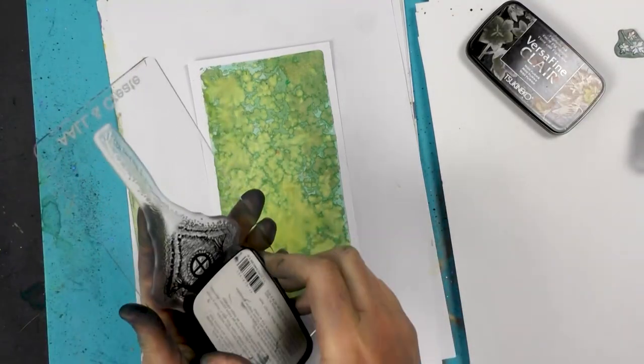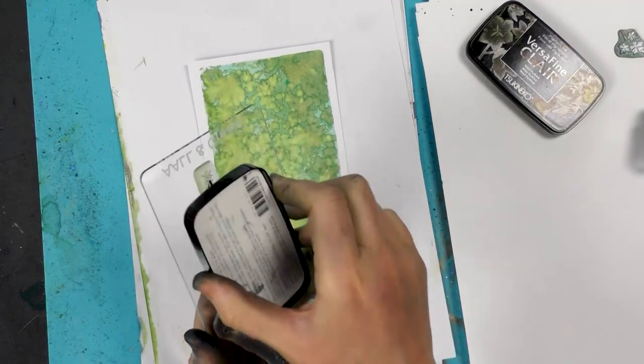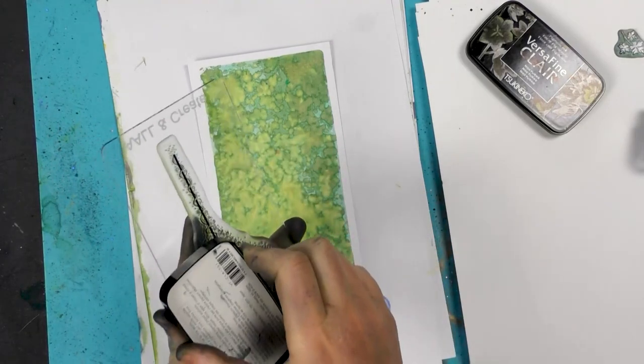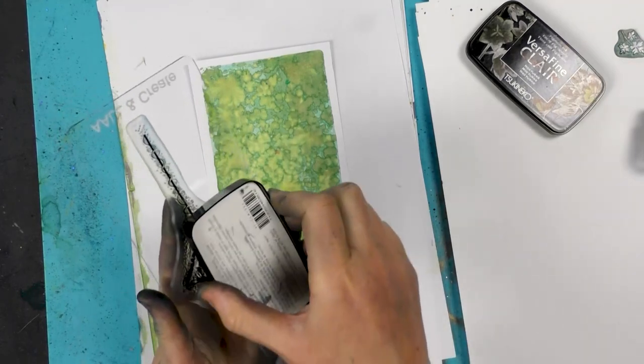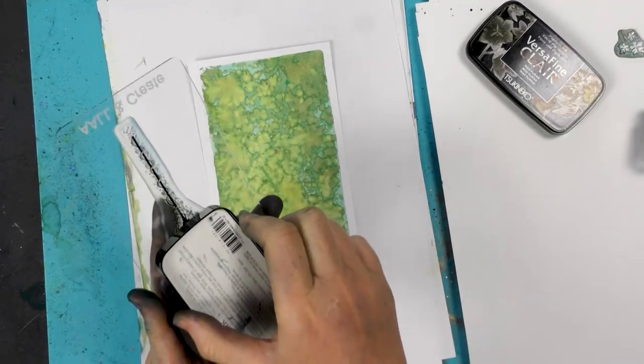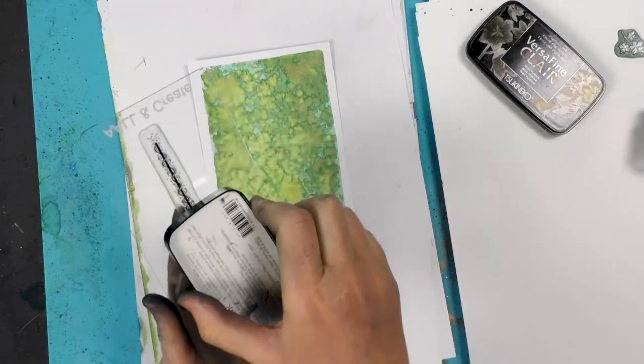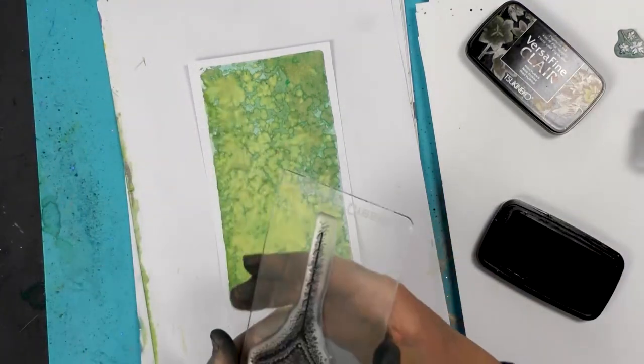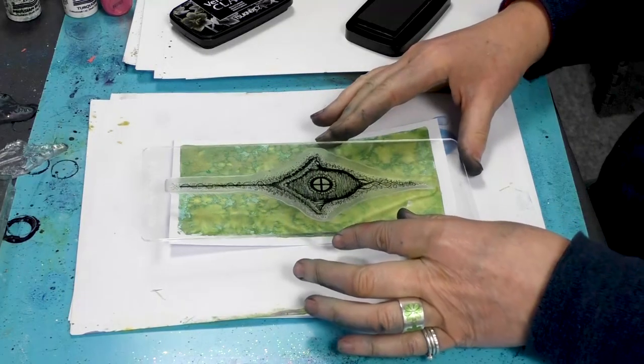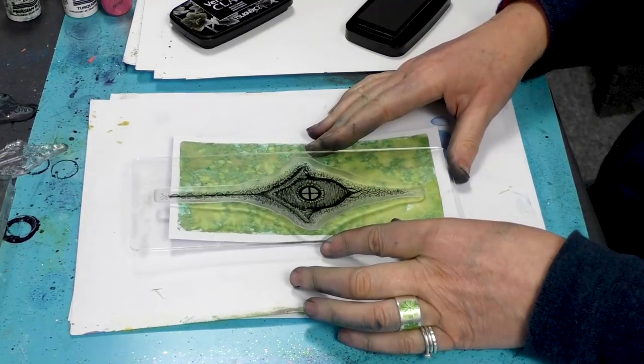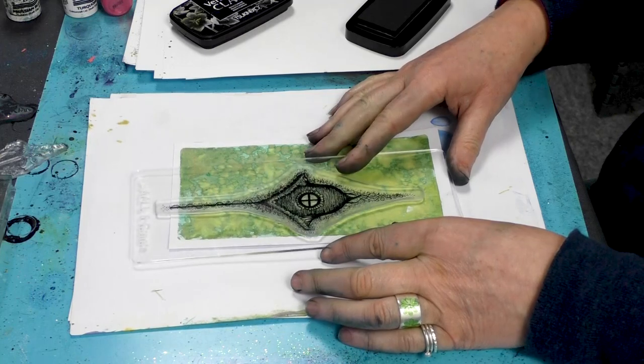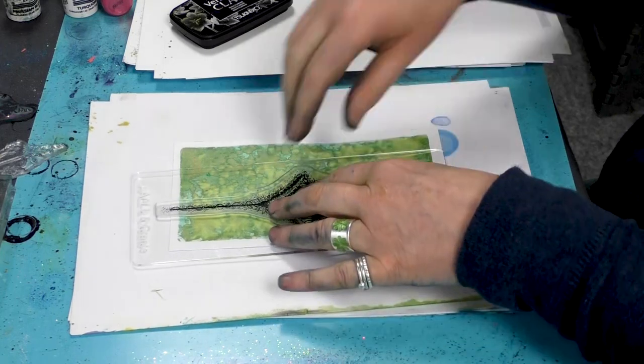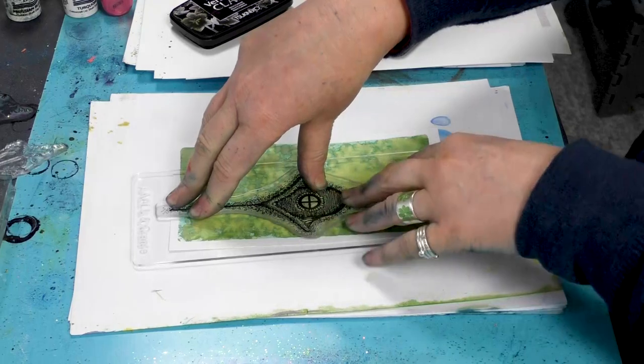So simply just ink up this, make sure that you have that whole area covered and then we're going to just place that down like so and then give that a good press.